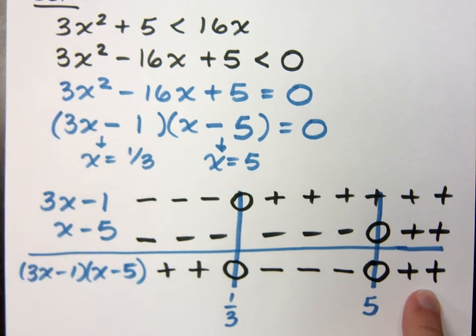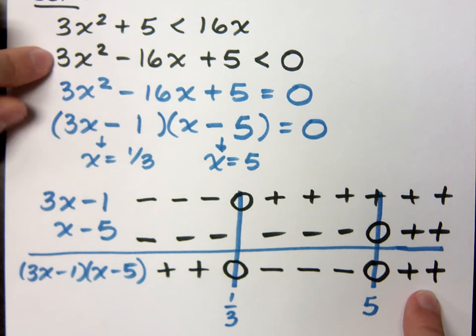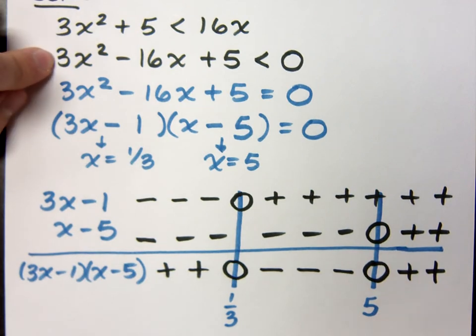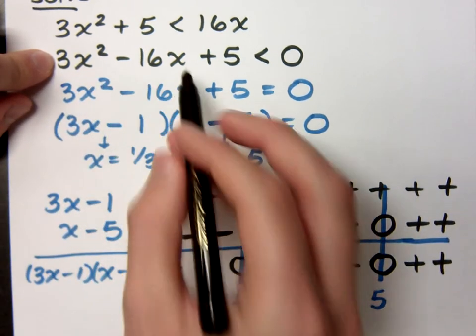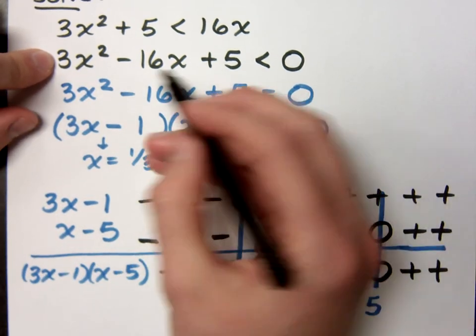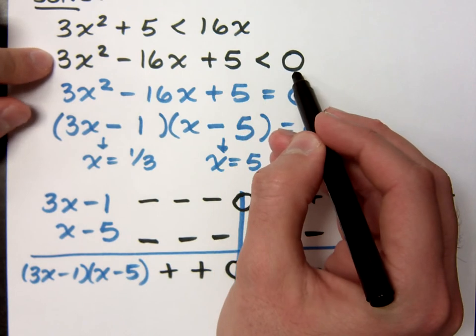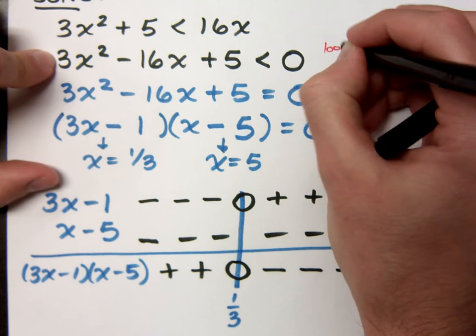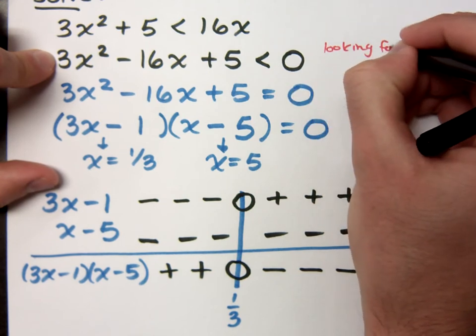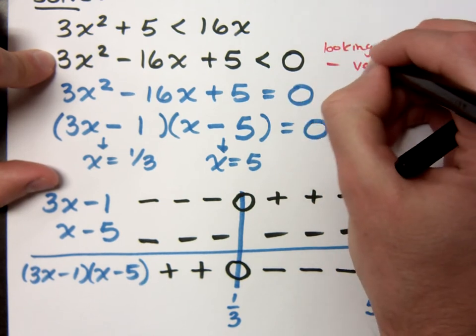So what I have right here is a sign analysis for this polynomial that I have up here. And of course, that really applies more to this guy right here. This is the one that's important. I have this quadratic inequality, and I want to know where is this guy less than 0. Since I'm looking for where is it less than 0, I'm looking for negative values.